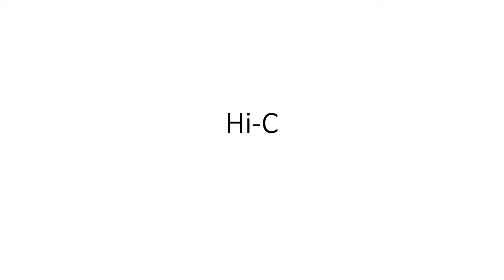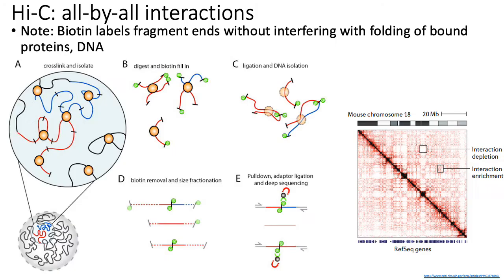We're going to spend a bit more time talking about the Hi-C method because it is one of the more popular 3C-based methods. Hi-C is the last 3C-based technology we'll talk about today. Hi-C measures all possible pairwise interactions between different genomic loci on the genome. Just like the previous 3C technologies, the assay starts by cross-linking, isolating, and then digesting with your standard restriction enzyme HindIII.